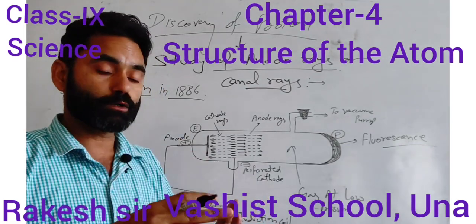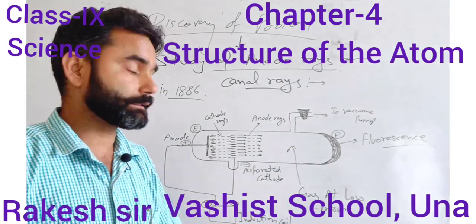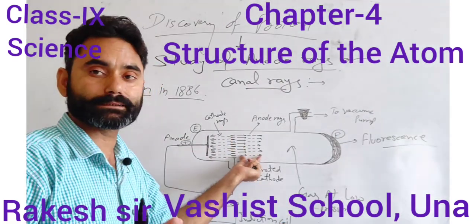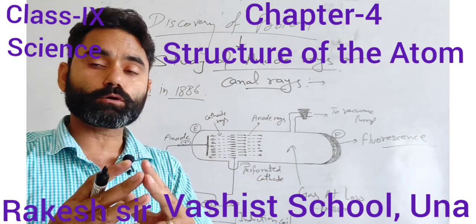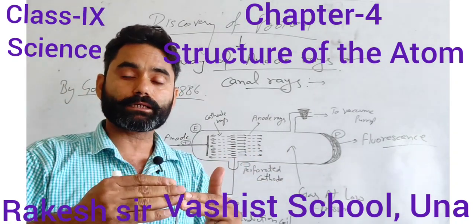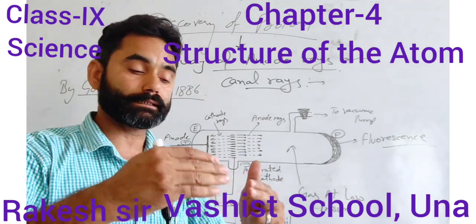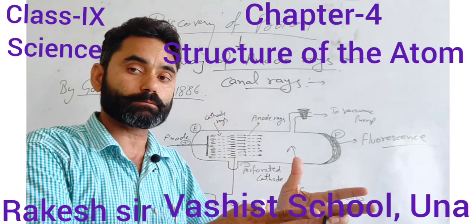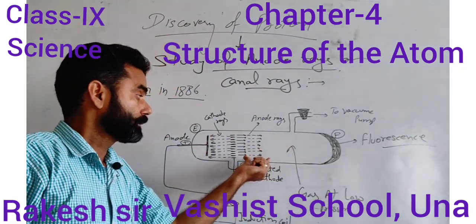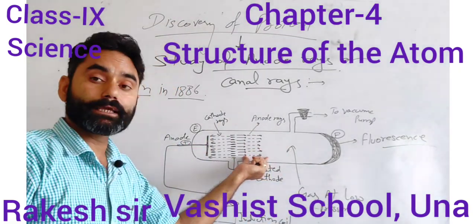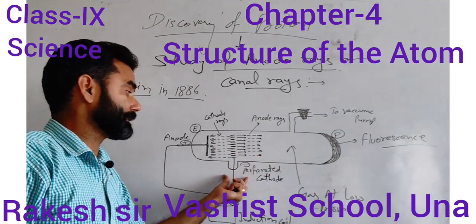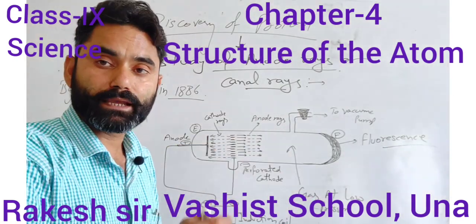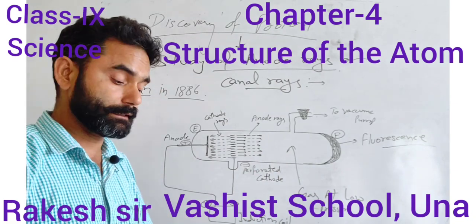The cathode rays strike the gaseous particles inside the discharge tube and ionize those gaseous particles. During this ionization, negative charge is produced, and side by side, positive charge particles are also produced.